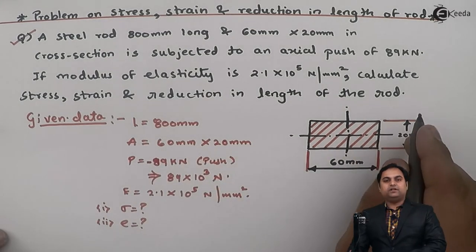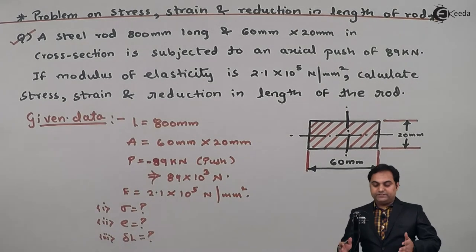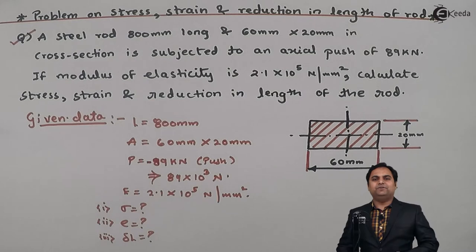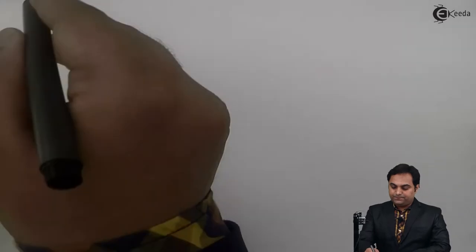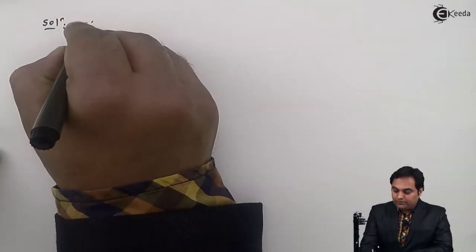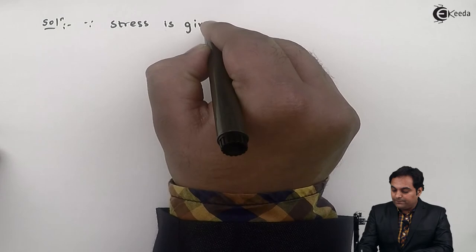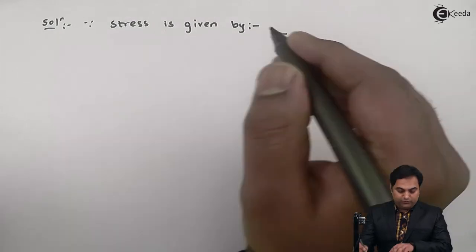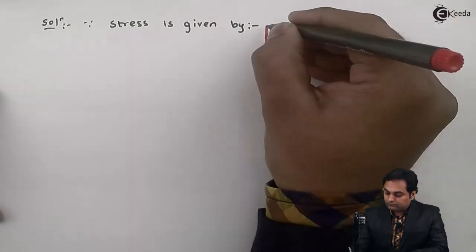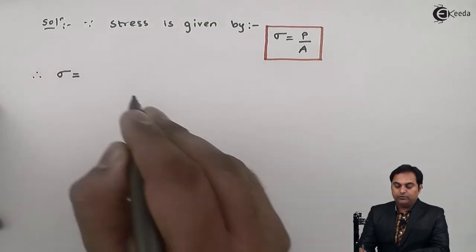We need to calculate strain and reduction in length, that is delta L. The first question is stress, so I'll start with stress. Stress is given by the formula: Sigma = P / A.